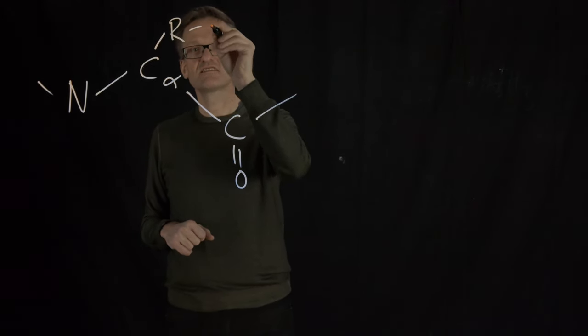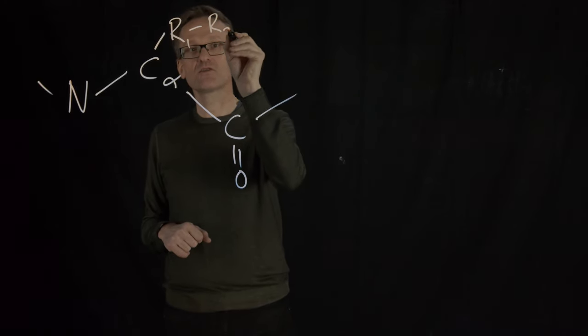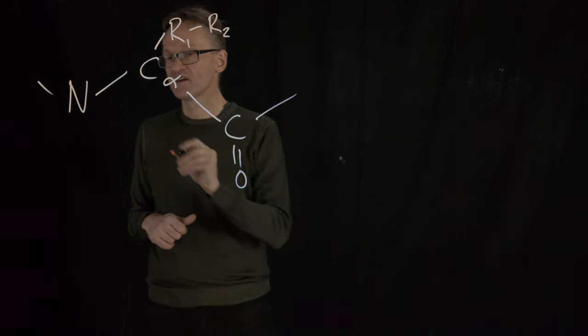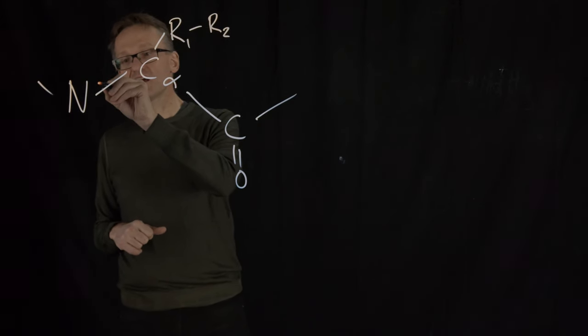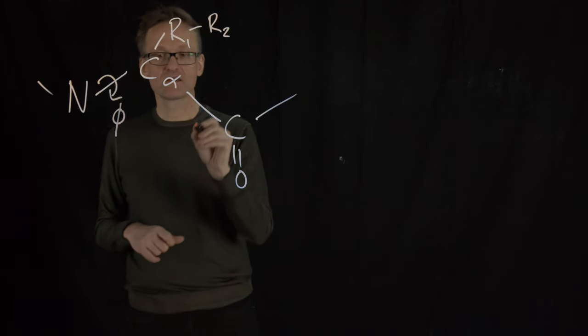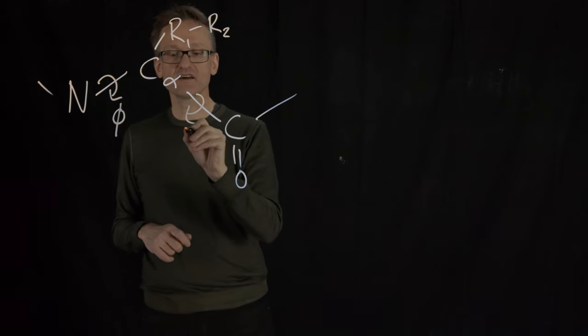Then we have the R group here, but the R group could be more than one atom, right? So there could be something else—let's say R1 and R2, say that they're carbons. This was the bond before the C-alpha that we call phi, and the bond after the alpha is called psi.